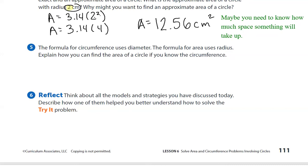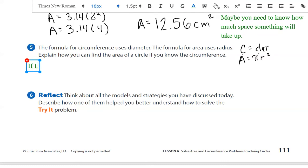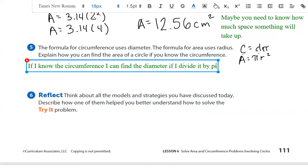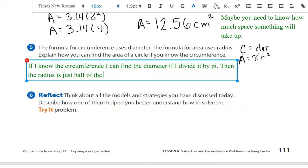Number 5. The formula for circumference uses diameter. Circumference equals diameter times pi. Area equals pi times radius squared. Explain how you can find the area of a circle if you know the circumference. If I know the circumference, I can find the diameter if I divide it by pi, then the radius is just half of the diameter.